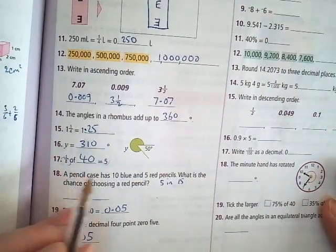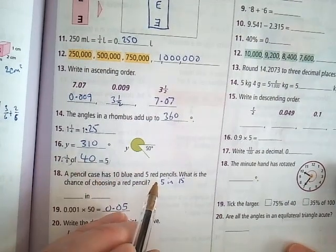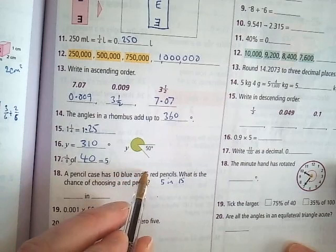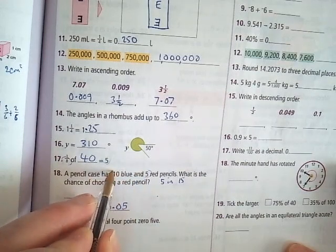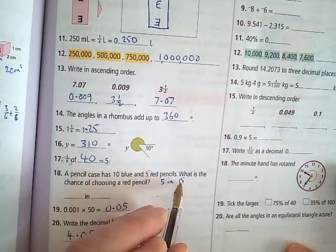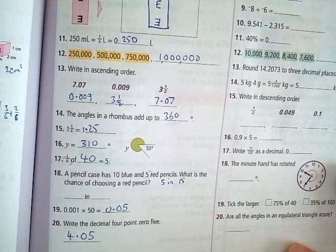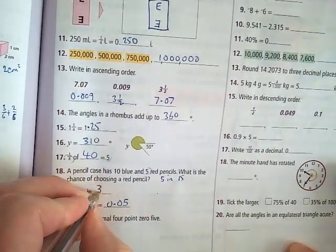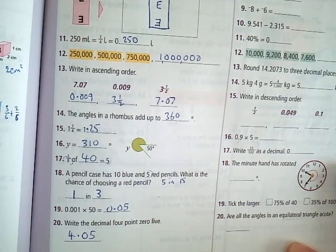Number 18. A pencil case has 10 blue and 5 red pencils. What's the chance of choosing a red pencil? Well, there's 5 red and altogether there's 5 plus 10, which is 15. So your answer is 5 in 15. But we're not going to leave it as 5 in 15. We're going to simplify that. That's 1 in 3. You've got a 1 in 3 chance of choosing a red pencil.